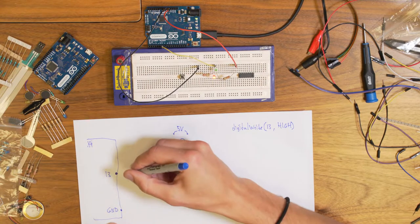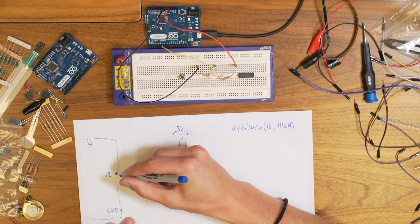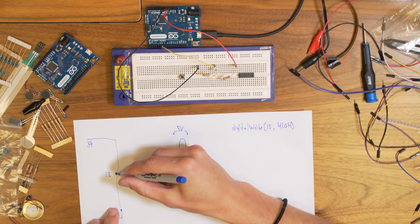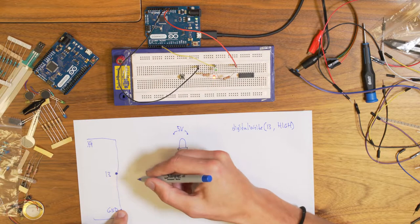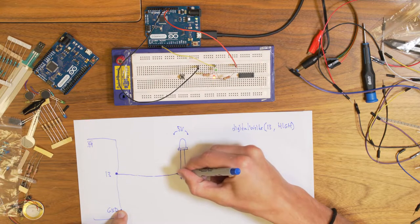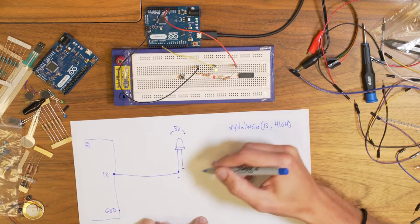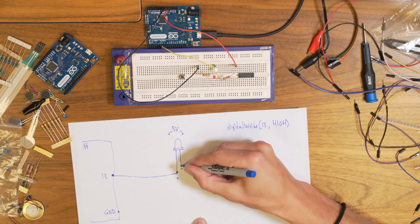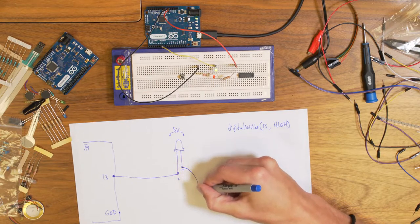So what we have then is that we put this one high. It will output five volts compared to ground. And if we take this one, go through into the positive end of the LED.